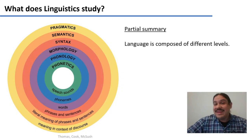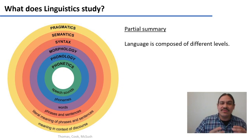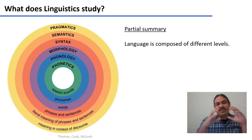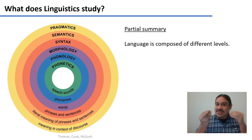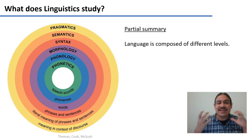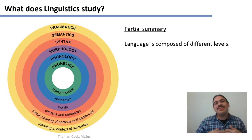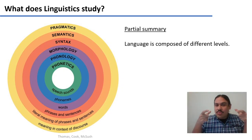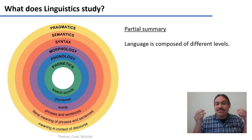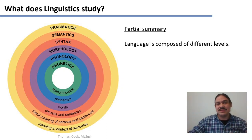So again, language can be analyzed as if it were composed of different levels: the sound level — phonetics and phonology; the words, their components, and how they're ordered — morphology and syntax; and meaning — how each word has meaning and how the meaning is computed including context — semantics and pragmatics.